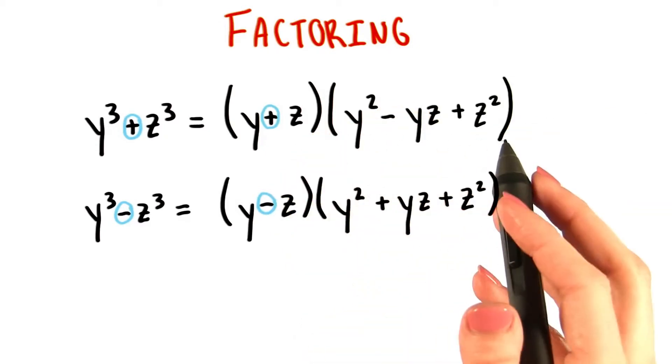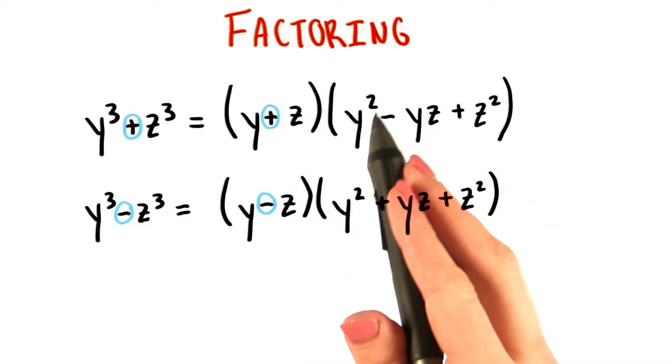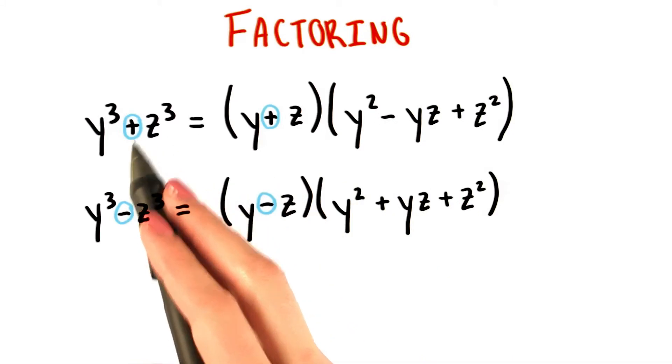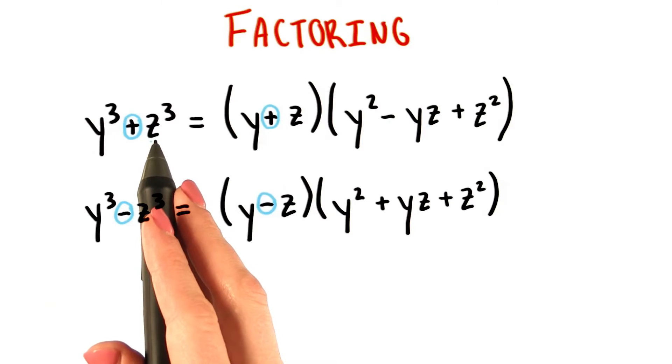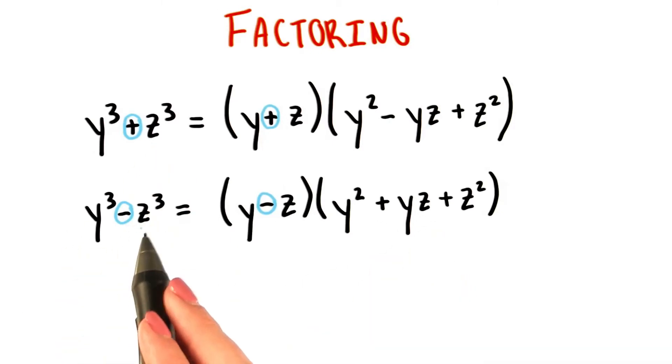The middle term of each trinomial, each quadratic expression, has a sign opposite that original sign between the terms. So you have a minus yz in the adding of the cubes and a plus yz in the subtracting.